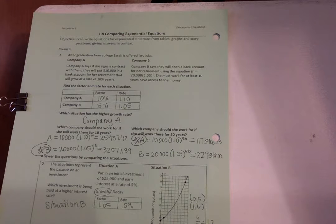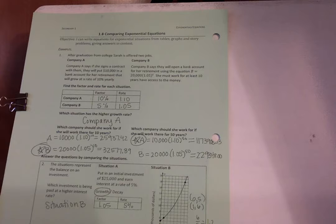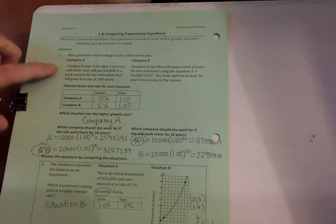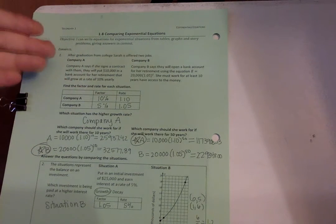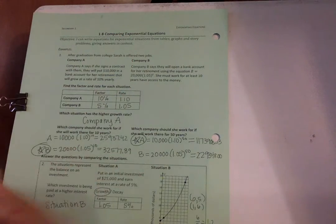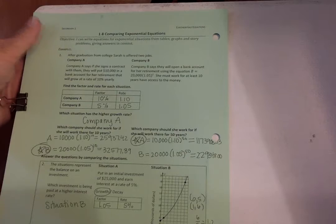So number one, there's an example of Sarah being offered two jobs. I'm going to let you go over this in class and I'm going to jump to the situations that you actually have to do. But you can go over this and it kind of just says how much Sarah is going to be paid after graduating college, Company A or B and the factor and the rates. I'm going to go straight to page 28 now. If you want to stop the video and go over that, that's fine.